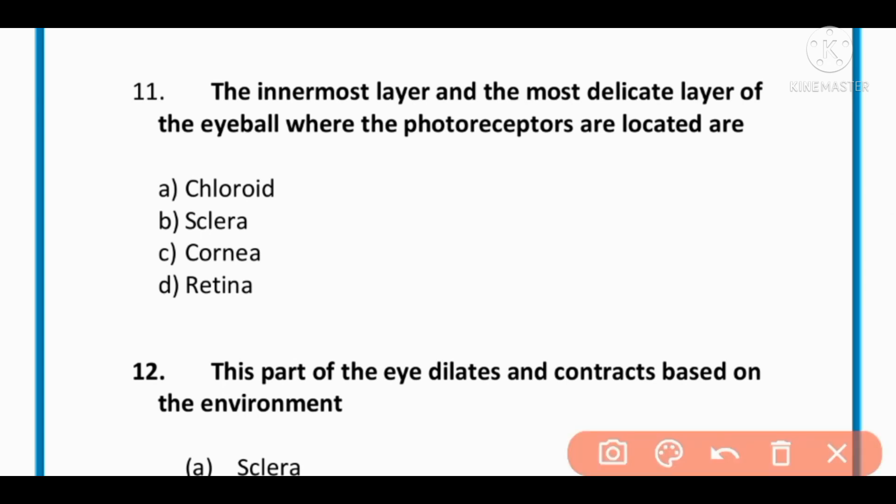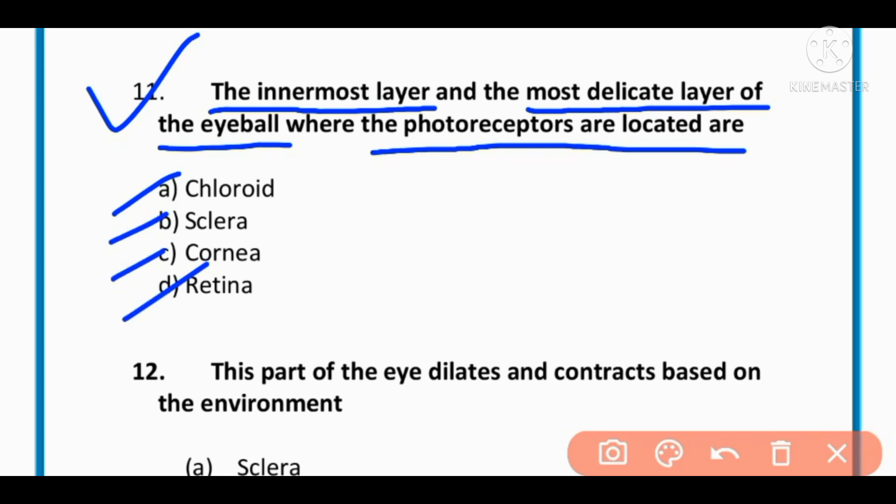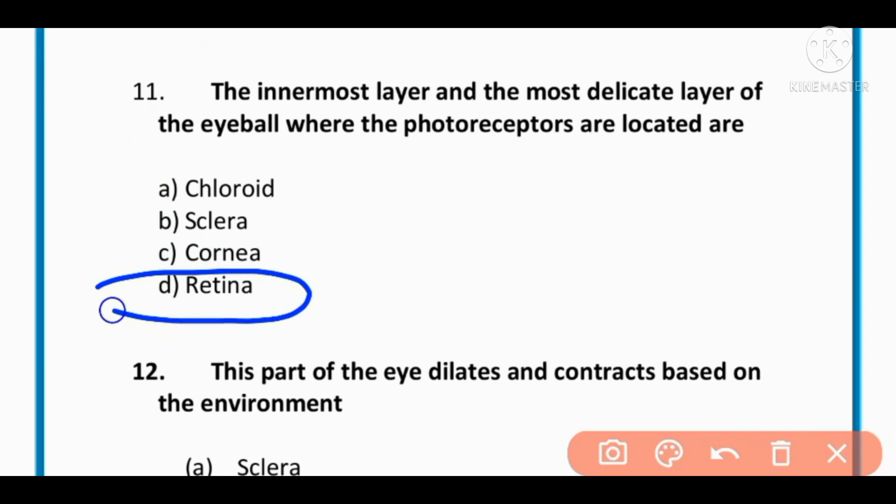MCQ number 11: The innermost layer and most delicate layer of the eyeball where the photoreceptors are located is called chloroid, sclera, cornea, or retina. The correct option is D: retina is the innermost and most delicate layer of the eyeball.